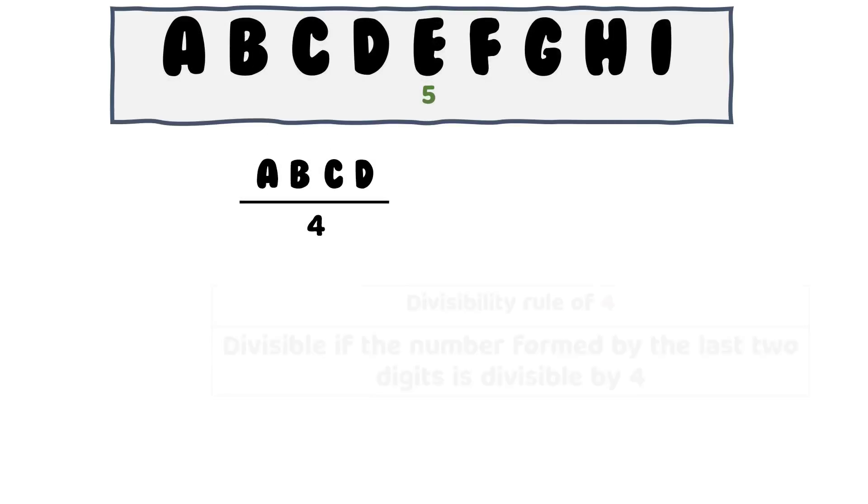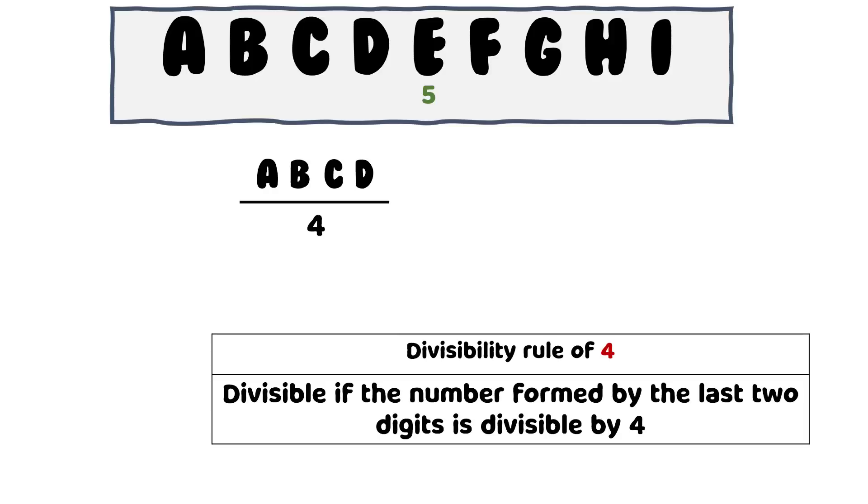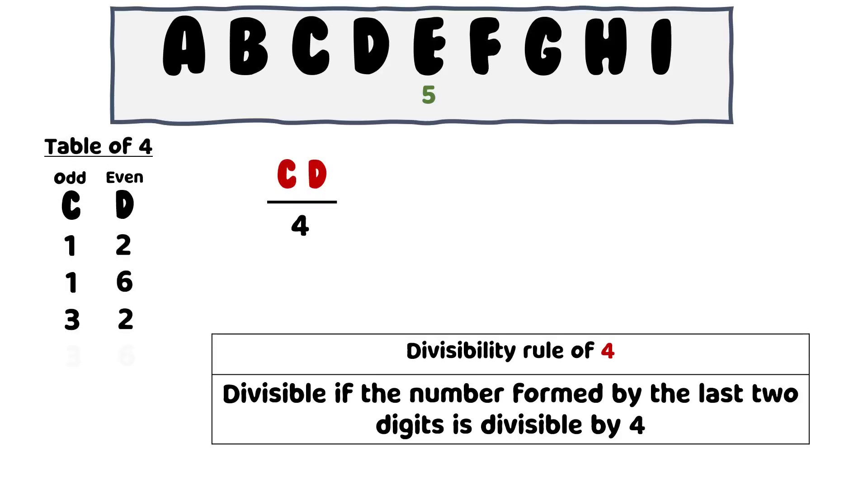Divisibility rule of 4 says the number would be divisible by 4 if the number formed by the last two digits is divisible by 4. So the number formed with C and D should be divisible by 4. Since C is an odd number and D is even, from the table of 4, considering the odd-even combination of C and D, we can say D can only be 2 or 6. For instance, the number CD can be 12, 16, 32, 36 and so on. So the possible value for the spot D is either 2 or 6.